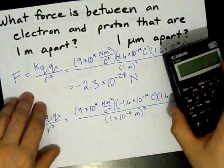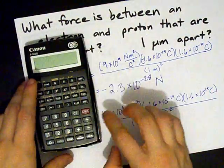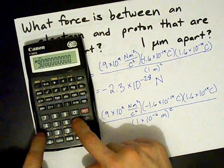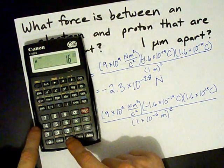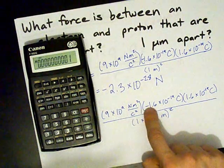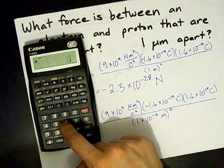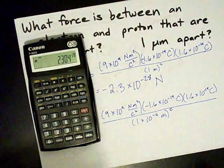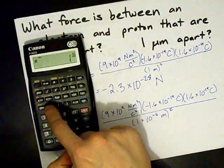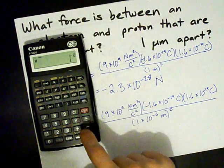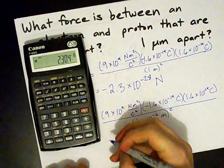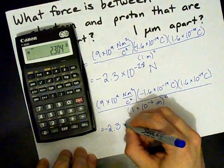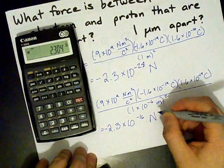Anyways, calculator time. 9 times 10 to the 9 times 1.6 times 10 to the negative 19. I'm not going to bother with the negative here again. Times 1.6 times 10 to the negative 19. And then divided by 1 times 10 to the negative 6 squared.